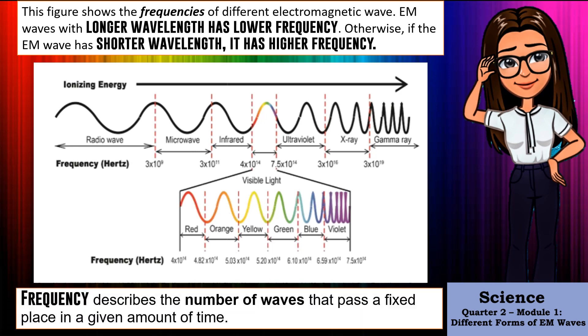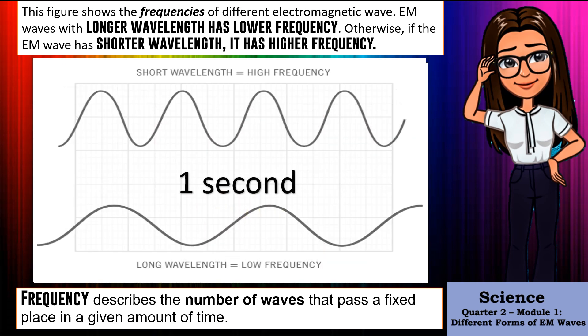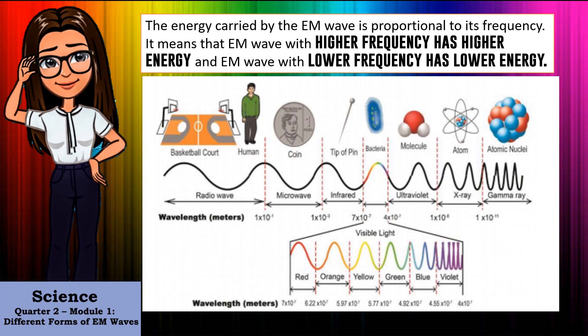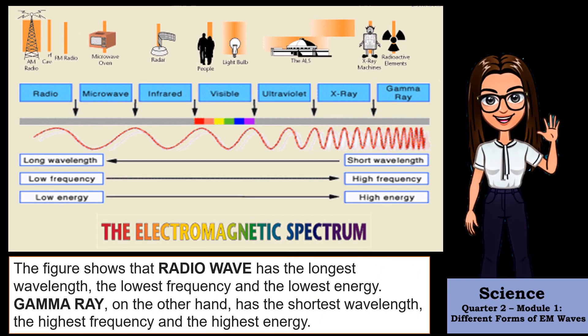Frequency describes the number of waves that pass a fixed place in a given amount of time. In the figure, in a given fixed place and time, more waves with shorter wavelength pass than waves with longer wavelength. The energy carried by the EM wave is proportional to its frequency, meaning EM waves with higher frequency have higher energy and EM waves with lower frequency have lower energy. The figure shows that radio waves have the longest wavelength, the lowest frequency, and the lowest energy.